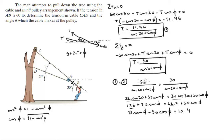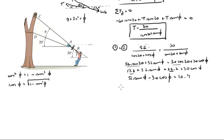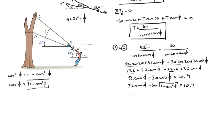Substituting that identity: 52 sine of phi minus 30 times the square root of (1 minus sine squared phi) equals 10.4. Rearranging gives 52 sine of phi minus 10.4 equals 30 times the square root of (1 minus sine squared phi).